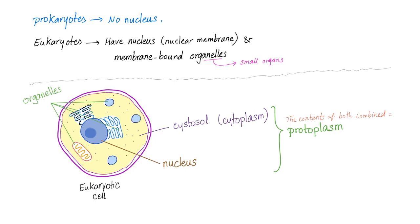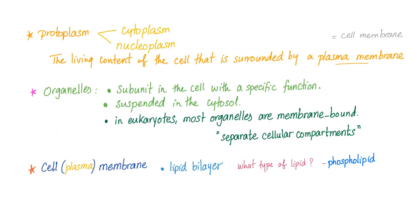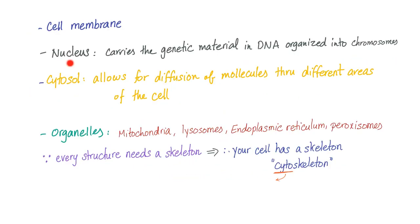Protoplasm is made of five basic substances: water, electrolytes, lipids, proteins, and carbohydrates. The protoplasm is surrounded by a plasma membrane, or cell membrane. The organelles are separate cellular compartments suspended in the cytosol. The cell membrane is a lipid bilayer — specifically a phospholipid bilayer. The nucleus contains the DNA material, organized in chromosomes — this is your genetic footprint. And the cell also has a cytoskeleton, because every cell needs a skeleton.